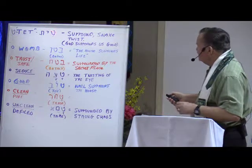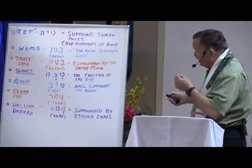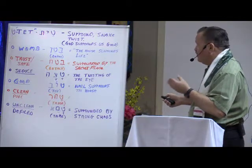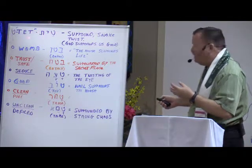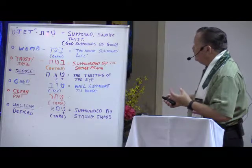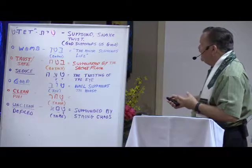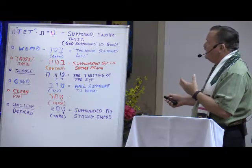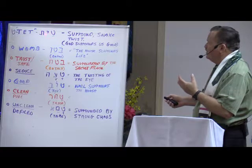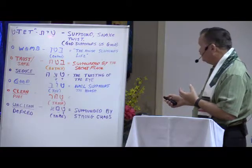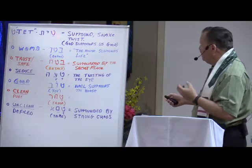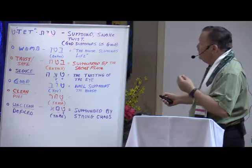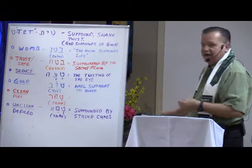How you spell tet is the letter tet, the yod, and the tav. Tav means covenant, and yod means the work of his hand. These letters making up the word tet actually mean to surround you with the work of the covenant.